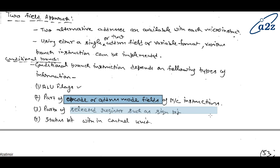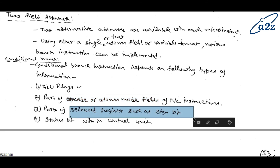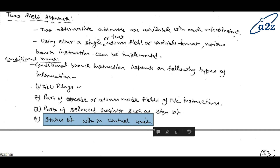Conditional branching can also depend on part of a selected register, such as the sign bit — whether the number is positive or negative. Fourth, it can depend on the status bit within the control unit. The status word/bit indicates the condition of a device — when input is coming, when output is happening, when it is high or low. So the status bit of the control unit also tells you the condition for branching, just as ALU flags do.